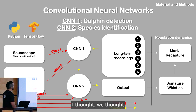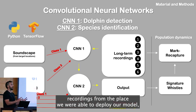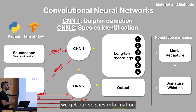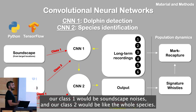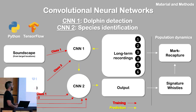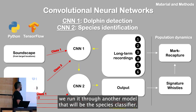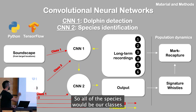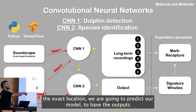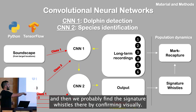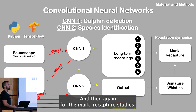Basically, the framework we designed was to take soundscape recordings from the location where we are going to deploy our model, get species information, and build a detection model where one class would be soundscape noise and the other class would be the whole dolphin group. Then we build another model as a species classifier, where all species would be the classes. Since we know exact locations, we can predict model outputs and confirm species visually, then use those data for mark-recapture analysis.